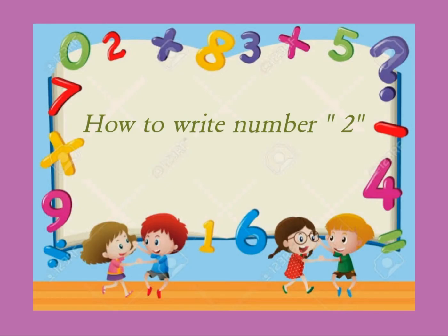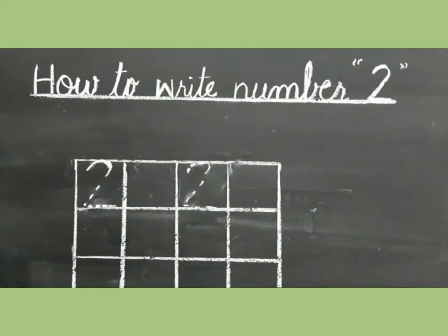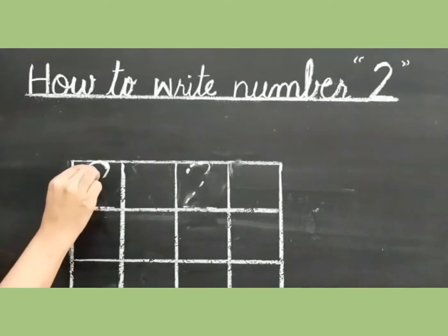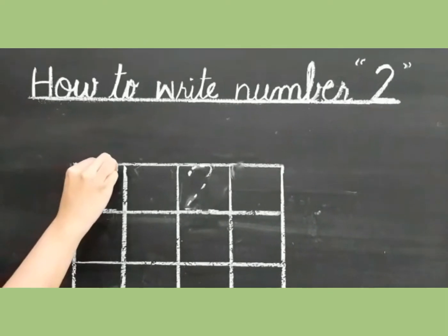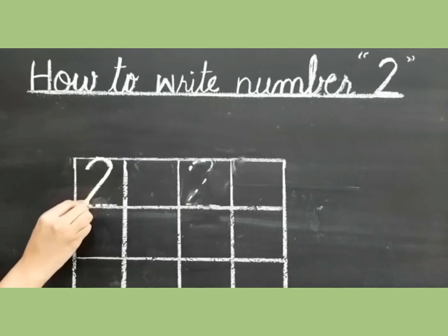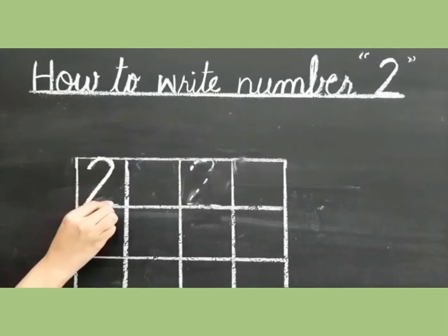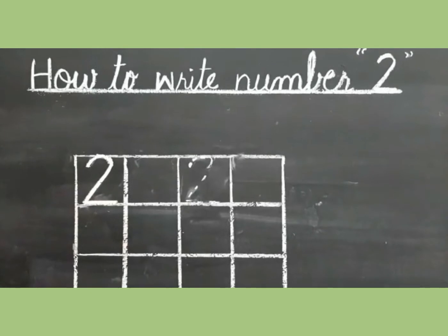Now we will learn how to write number 2. Look how to write number 2. First of all, start with this dot. Go up, around, go down, then go straight across. This is number 2.